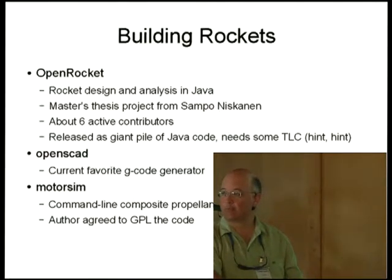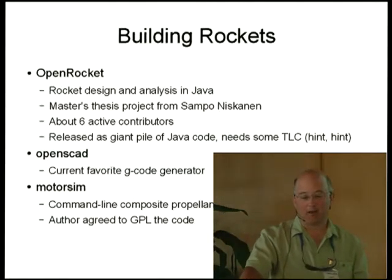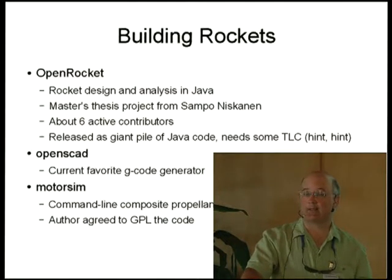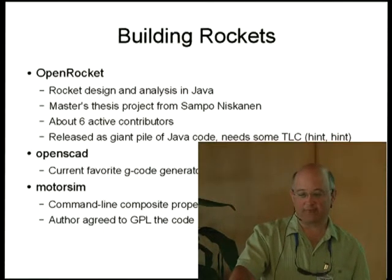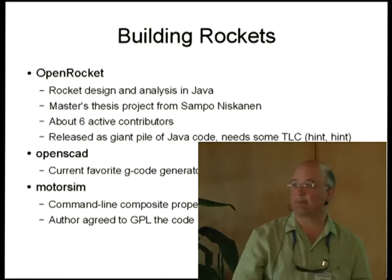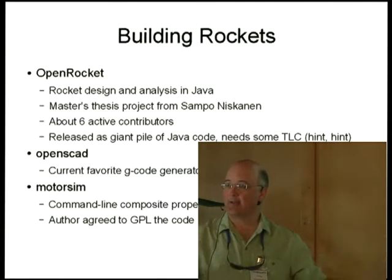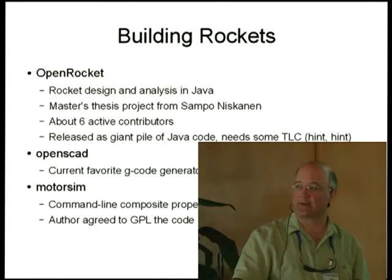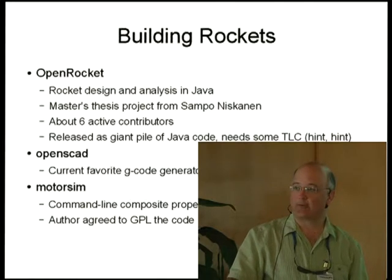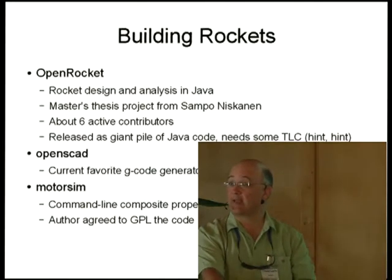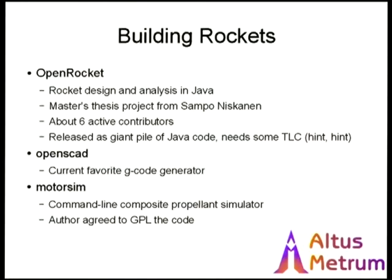There are about six people who are actively working on this project. It's a giant piece of Java code — like many Java packages in the archive, it arrives as a steaming pile of jar files containing a bunch of upstream stuff and stuff from other projects, all mashed together. Putting Java code into sensible shape for the Debian project is kind of a pain. OpenRocket is no exception; we're one or two releases back, and it's a project that could use a little help making it clean in the Debian world.